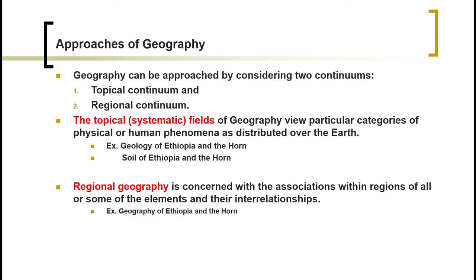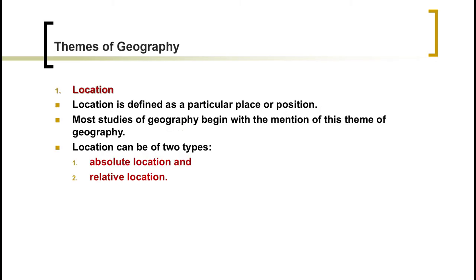The most known themes of geography is location. Location is a particular place or position that can be expressed by latitude or longitude. By latitude or longitude if it is absolute location, or by adjacency if it is relative location. Most studies of geography begin with the mentioning of this theme — location is the most important theme in geography.